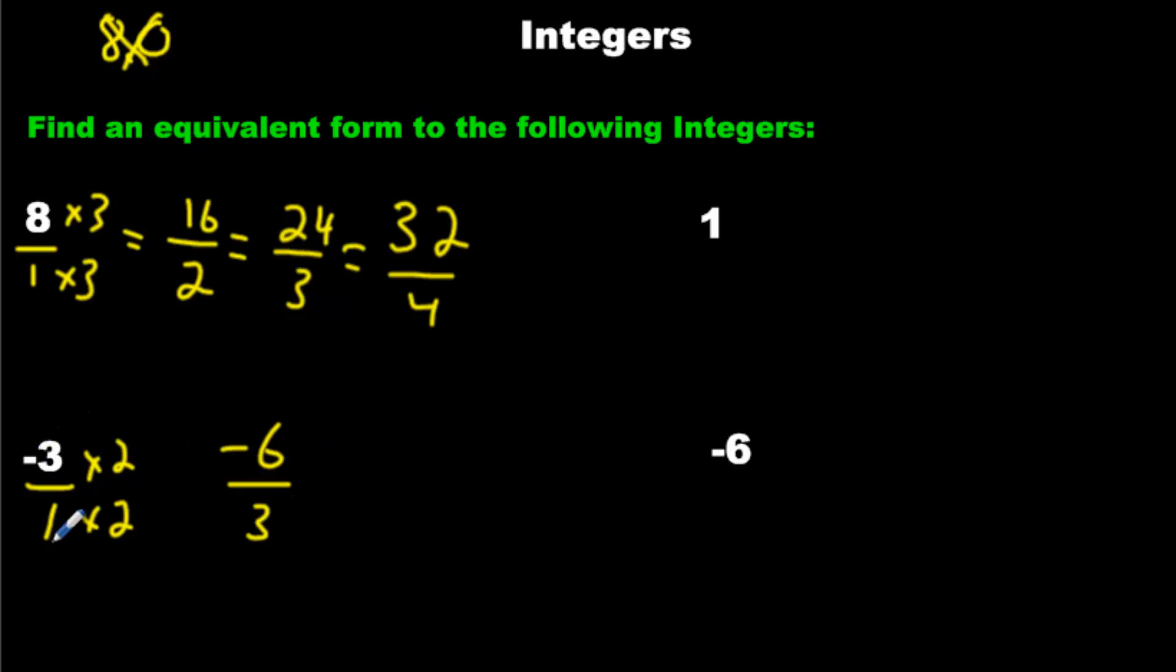If I triple these, times them both by 3, I'm going to get negative 3 times 3 is negative 9, and 1 times 3 is going to be 3, and these two are equivalent. Times this by 4, times that by 4, we're going to get negative 12 over 4. Now look at this. This is equivalent to that, which is equivalent to that, which is equivalent to that. They're all the same value.